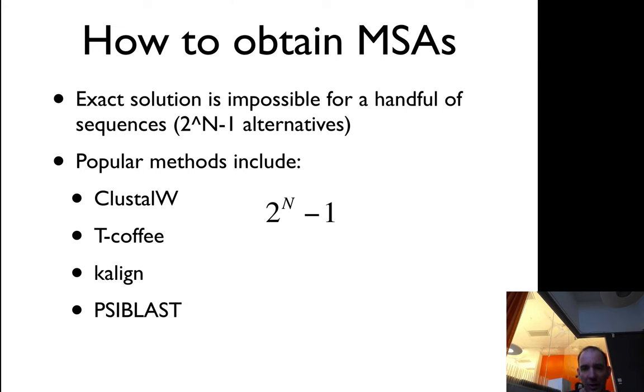However, first we need to figure out how to obtain what we call a multiple sequence alignment. In theory, a multiple sequence alignment is actually quite easy to understand. It's basically the same idea—you have two sequences but you just add additional sequences.